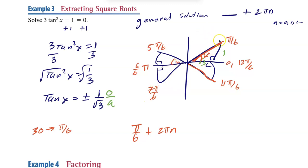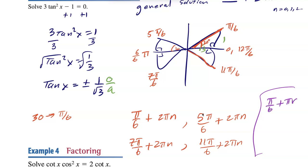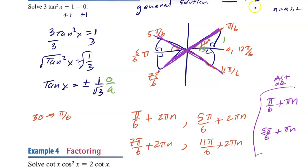If you're feeling advanced, you can notice that opposite quadrant answers are separated by exactly π, so instead of listing all four with +2πn, you can write π/6 + πn and 5π/6 + πn as a shortcut. Either way is correct — anytime there's no domain given, find your answers and add 2πn for the general solution.